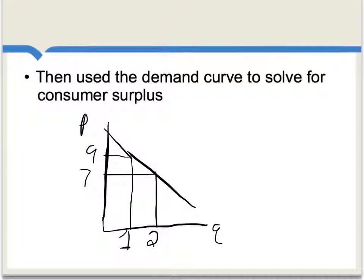Dupuis then used that downward-sloping demand curve to solve for what we now call consumer surplus. If you imagine that the price is here at 7 and this is what the demand looks like, well, the consumer surplus is how much extra utility people get for units of the good above and beyond the 7 they're paying as the price. We would graph that simply by filling in this area — it's the area where the demand curve is lying above the price, and that's a measure of consumer gain.